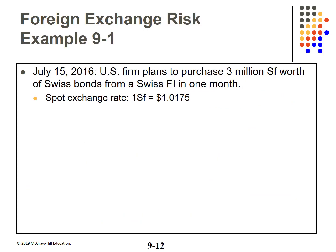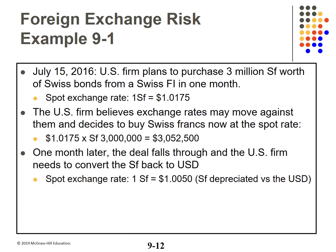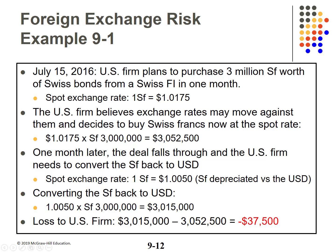Example 9-1 from the text. July 15, 2016: a US firm plans to buy 4 million Swiss francs in one month. The current spot exchange rate is one Swiss franc to $1.0175 — this is an indirect quote. The US firm fears rates will move against them, so they buy Swiss francs now at the spot rate: 3 million Swiss francs is $3,052,500. One month later, the deal falls through and the firm needs to convert the Swiss francs back to US dollars. The spot rate is now one Swiss franc to $1.005. The Swiss franc has depreciated versus the US dollar; converting back equals $3,015,000, so the US firm has lost $37,500 in the transaction.